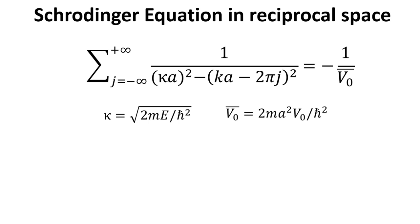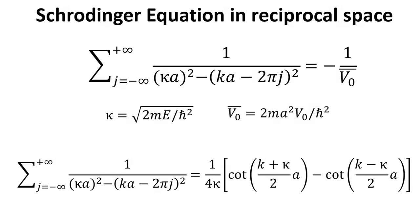The equality can be rewritten in a format that enables us to easily perform the summation. To this end, we define the dimensionless variables kappa and V naught bar. The summation can then be recognized as the difference between the cotangent of the symmetric and anti-symmetric combination of kappa and k.